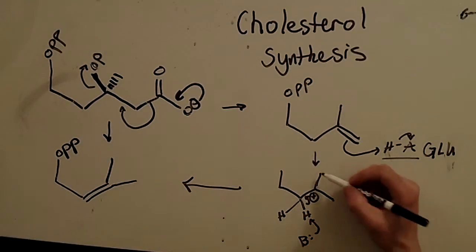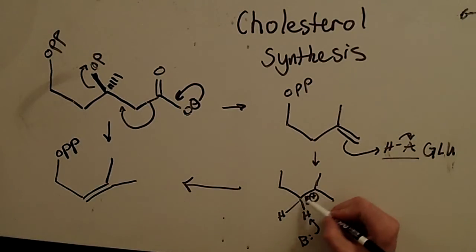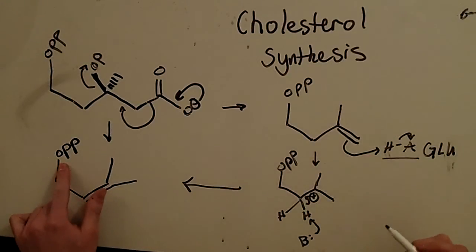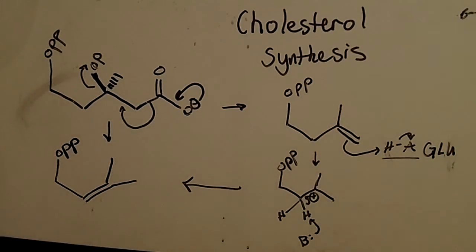This is, you've got the dimethyl groups here. This carbon-carbon bond formed. And then we have the OPP up here. So same as there. Okay. So that's the end of part two. I'll see you in the next video. Thank you.